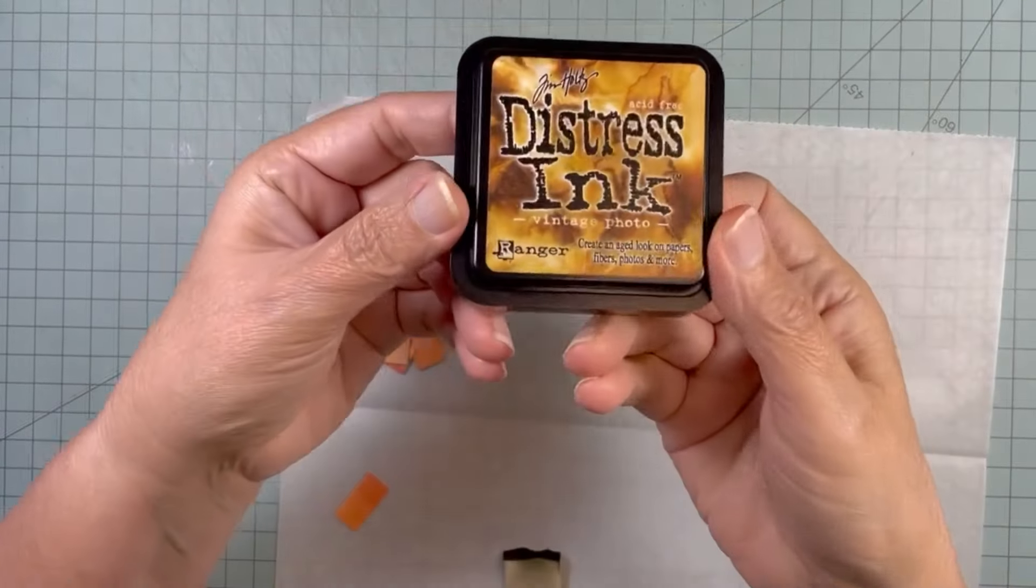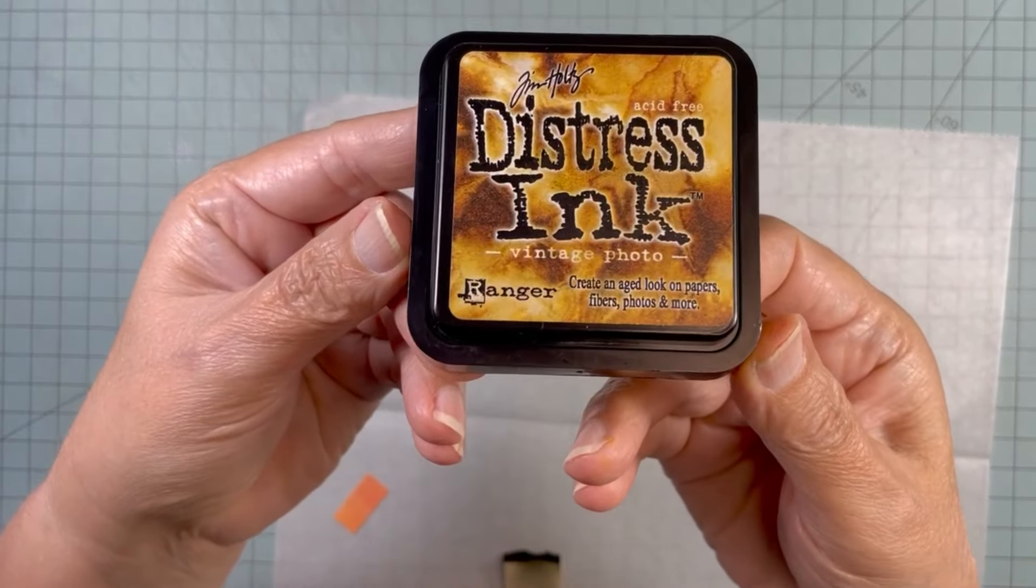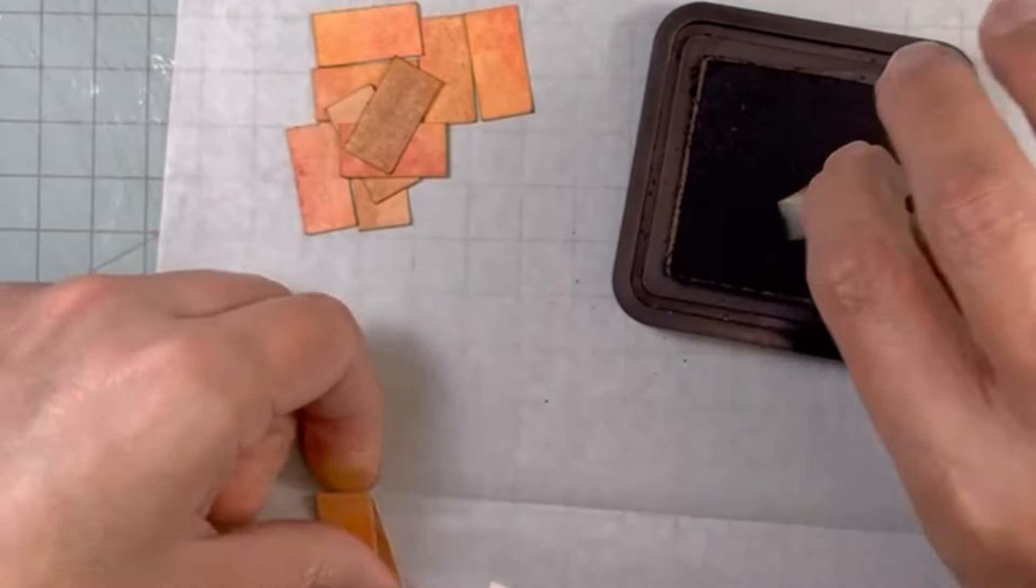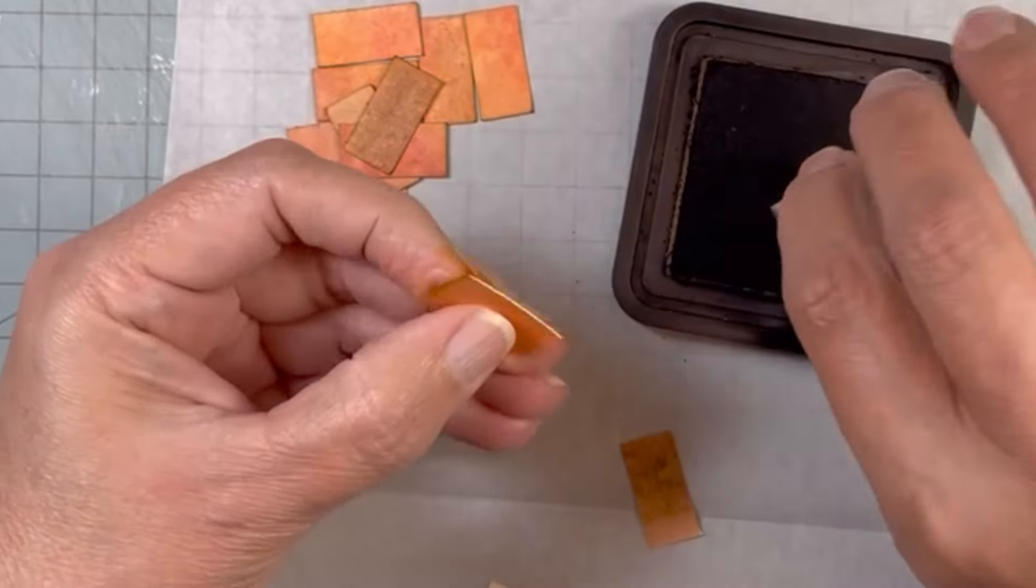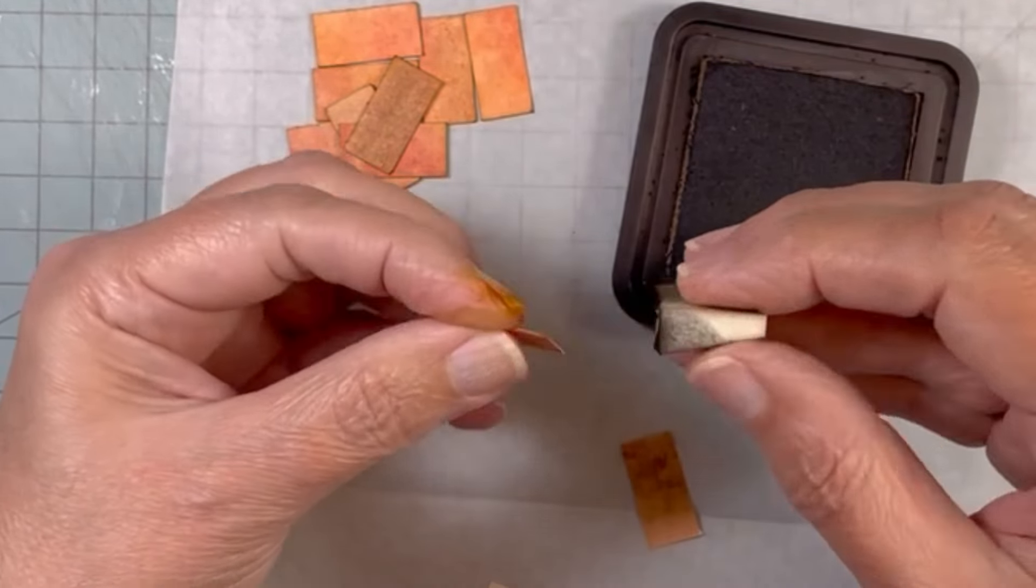One of the first things I want to try with these tiles is inking the edges with this distress ink. I usually do that with my wood flooring. So I thought I would try it with this terracotta tile. I thought it would give it kind of that grout look without doing the grout.